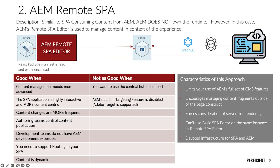For the second approach using AEM's Remote SPA Editor, it's good when: content management needs are more advanced, the SPA application is highly interactive and more content-centric, content changes are more frequent, authoring teams control content publication, development teams don't have AEM development expertise, you need to support routing in your SPA, and content is dynamic. It's not as good when you want to use the context hub and AEM's built-in targeting feature is disabled. Adobe Target is however supported.